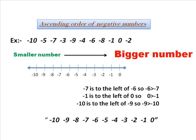Moving on to ascending order of negative numbers. I have taken an example of numbers from 0 to minus 10 and arranged them on a number line. As minus 1 is to the left of 0, minus 1 is smaller number. Minus 2 is smaller because it is to the left of minus 1. Likewise any number to the left is smaller. The order is: minus 10, minus 9, minus 8, minus 7, minus 6, minus 5, minus 4, minus 3, minus 2, minus 1, and 0. These numbers are in ascending order as minus 10 is smaller and 0 is bigger.